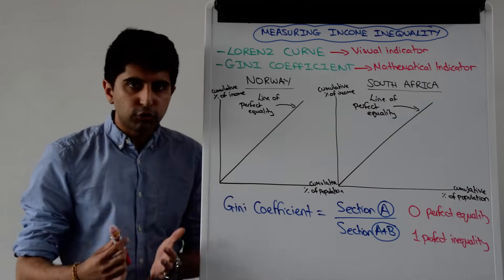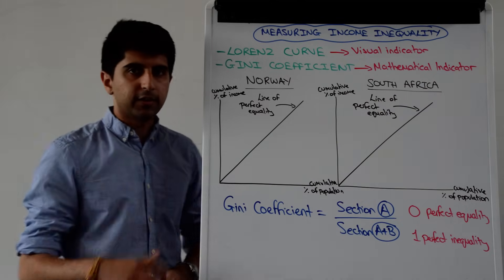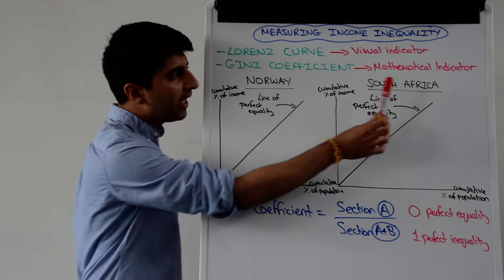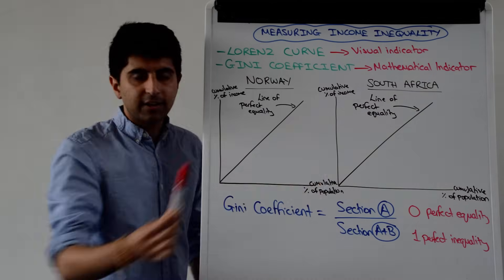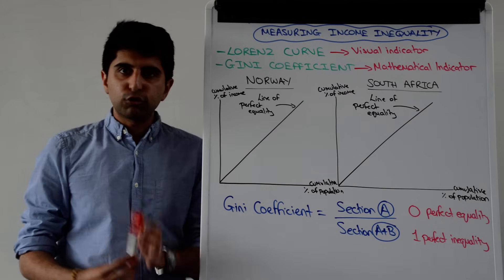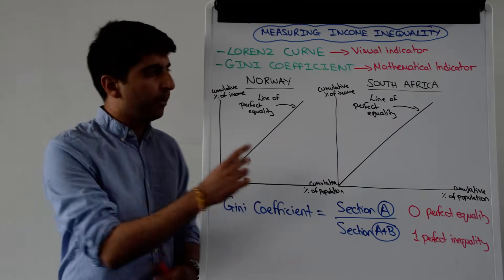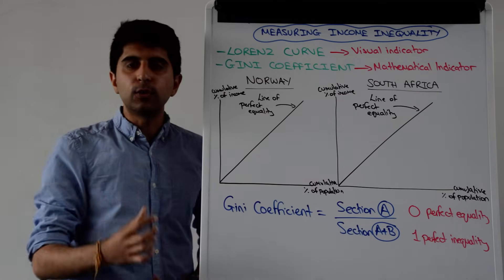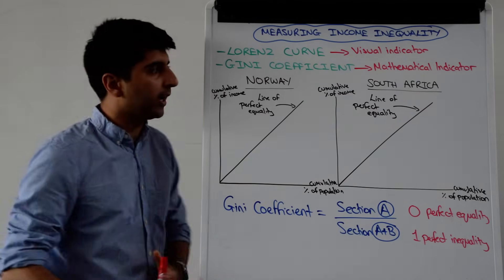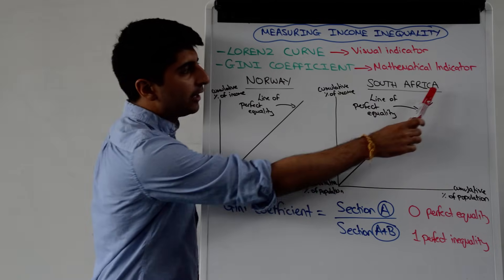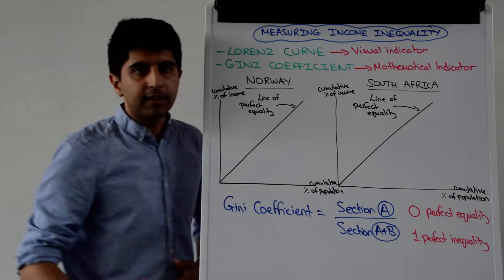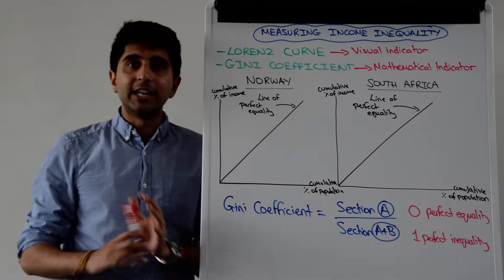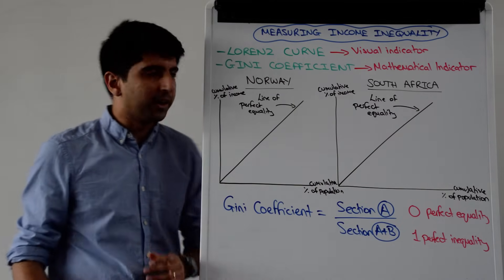Let's look at how to construct Lorenz curves first. We're going to look at Norway and South Africa and construct Lorenz curves for both, where Norway has a very equal distribution of income and where South Africa's income distribution is one of the most unequal in the entire world.